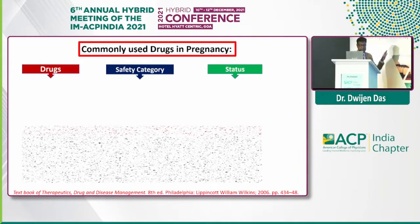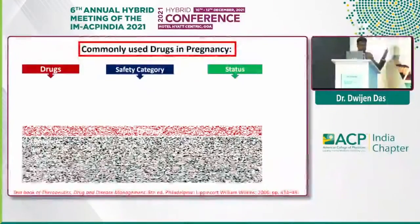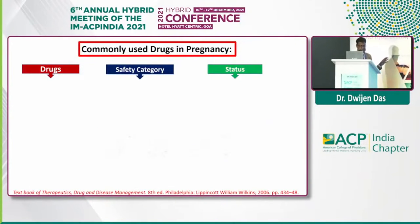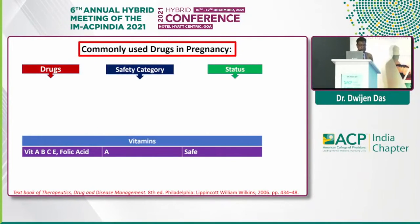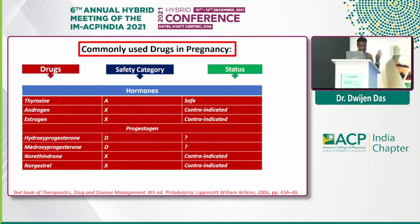For antitubercular drugs, it is a controversial zone, and ethambutol may be said to be safer in comparison to other drugs. Vitamins A, B, C, and folic acid are safe — they are Group A, so they can be used very easily. In hormone replacement, thyroxine is the safest, but androgen and estrogen are preferred to be avoided and are contraindicated. Hydroxyprogesterone and medroxyprogesterone is a controversial area — we may have to consider them at some times, but not necessarily.